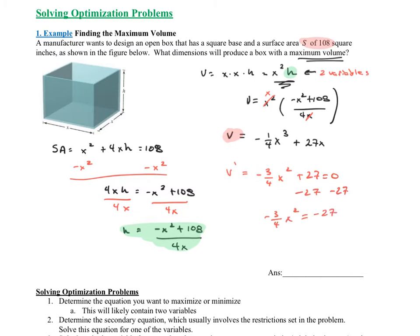I multiply both sides by negative four-thirds, the reciprocal, and I end up with x squared equals 36. Taking the square root of both sides gives plus or minus 6, but the negative doesn't make sense here because we're talking about the side of a box. So our critical value is x equals 6. We need to quickly check whether this is actually a maximum or a minimum.